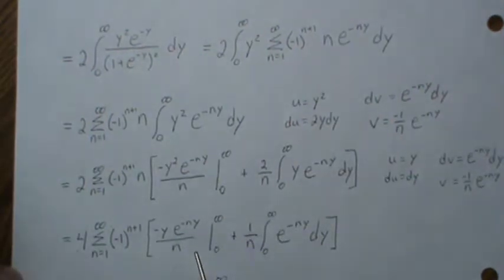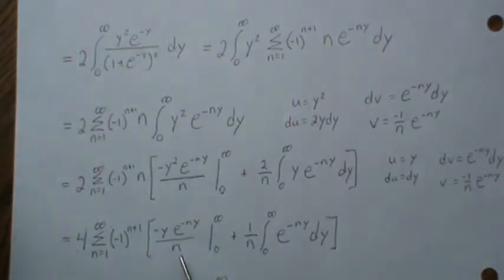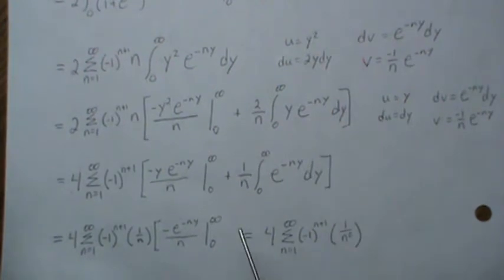And then here again, the same thing: when you put in infinity, this piece goes to zero so much faster than that goes to infinity that the whole thing ends up being zero. And then when you plug in zero into here, that wipes out, so we're left with this. Now this piece here can be brought out and we just have a 1/n. Then when we integrate this we get this piece: plug in infinity and zero, then minus plug in zero, you get 1/n that goes to here and becomes 1/n².